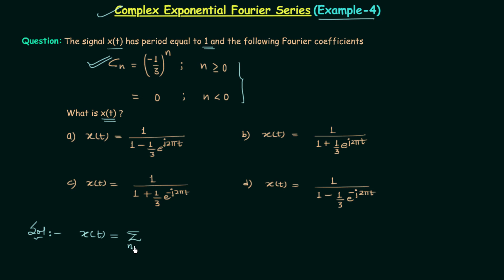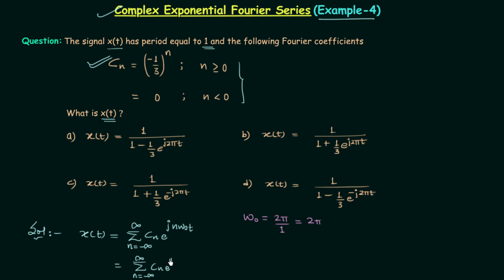We already know the complex exponential Fourier series expansion is equal to summation n from minus infinity to infinity of c_n e^(jnω₀t). First we will calculate ω₀. We know the period is equal to 1, and ω₀ = 2π divided by the period, so ω₀ = 2π. Therefore, X(t) = summation n from minus infinity to infinity of c_n e^(jn2πt).